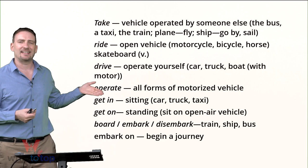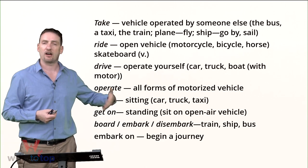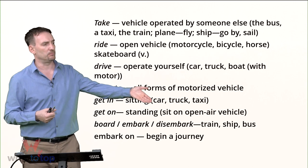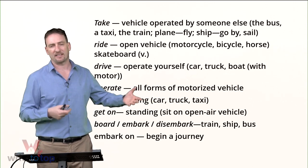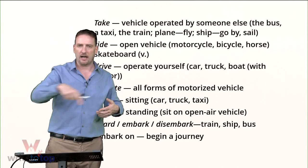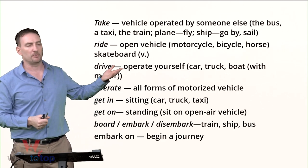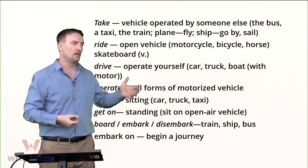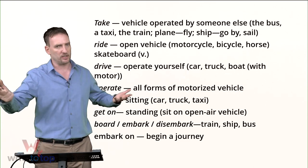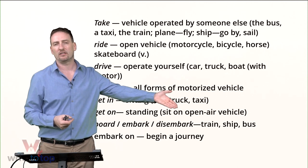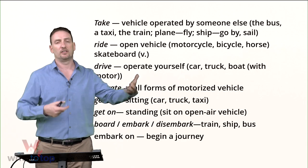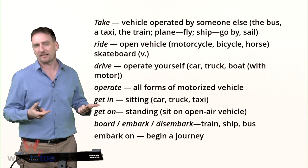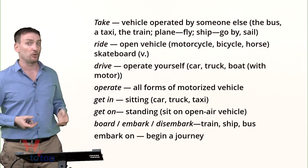You get in something when you're sitting — so you get in a car, in a truck, in a taxi. You go inside and you sit. You get on something when you're standing. So you get on a train, you get on a bus — even if there are seats, you can walk to the back, walk up and down the train or bus. You can get on a ship, because you can walk around. In a car or taxi there's nowhere to walk; you're sitting right away. With open-air vehicles, like a motorcycle or bicycle, you get on and sit, but you're in open air. It's a little tricky, but the more you practice and read, the more these become tattooed on your brain.